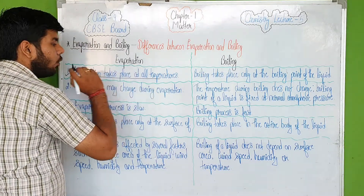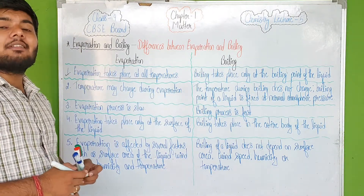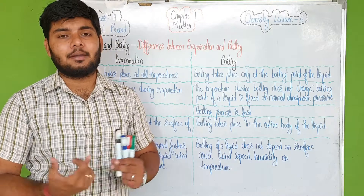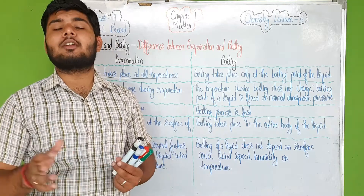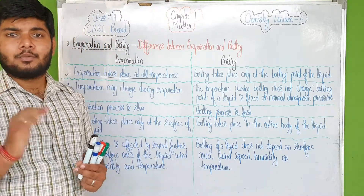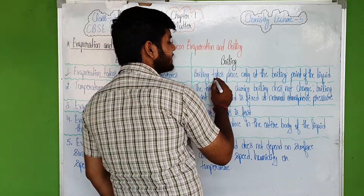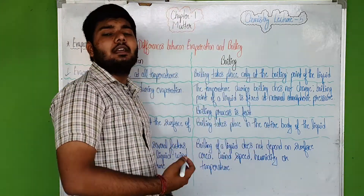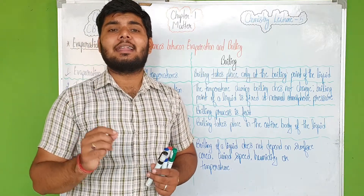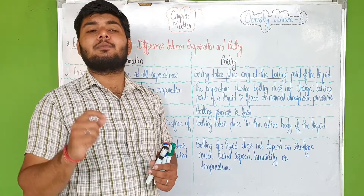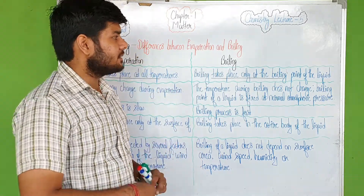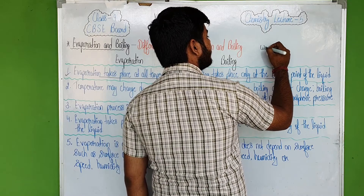The first point: evaporation takes place at all temperatures. It is not necessary to heat the liquid to a fixed temperature — it can happen at any temperature. Whereas, boiling takes place only at the boiling point of the liquid. For example, if I talk about water, boiling requires reaching a specific temperature.